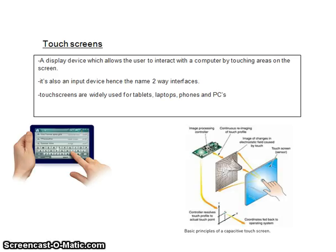Resistive screens often work best with a stylus, because they work by detecting changes in electrical charge when internal charged and conductive layers are pressed together. Featuring on the page, there is a picture of the image processing controller and basic principles of a capacitive touch screen.